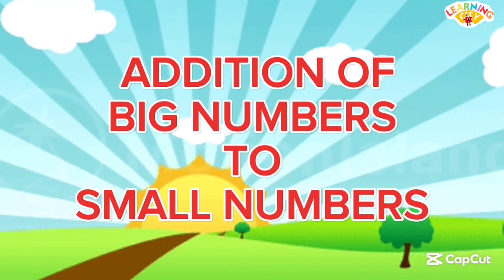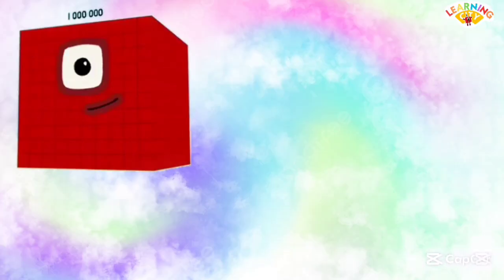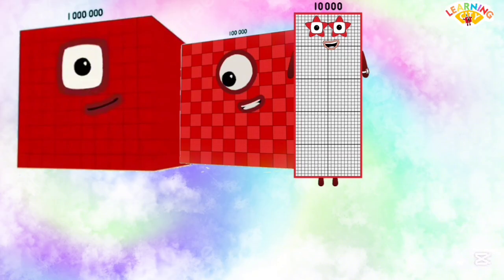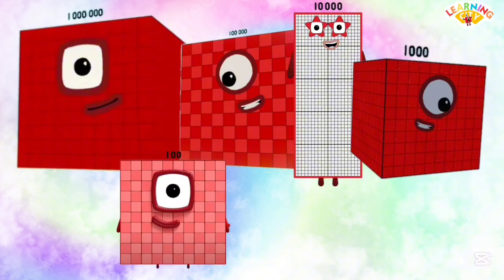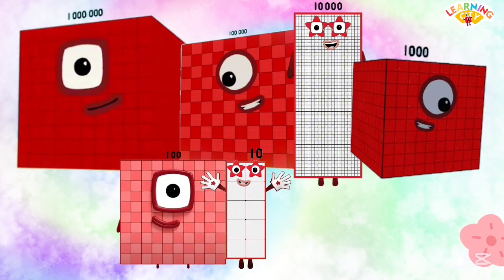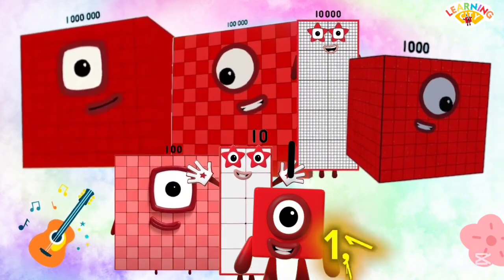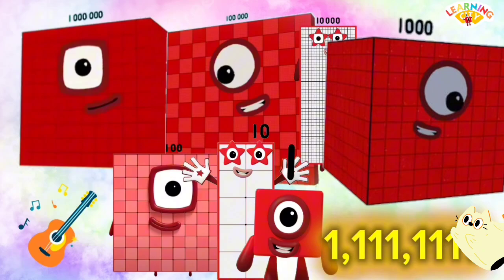Hi friends! Let's learn addition of big numbers to small numbers using number blocks. 1 million plus 100,000 plus 10,000 plus 1,000 plus 100 plus 10 plus 1 is equals to 1,111,111.